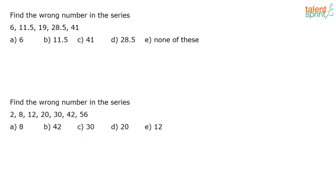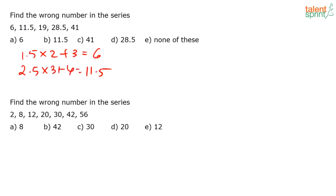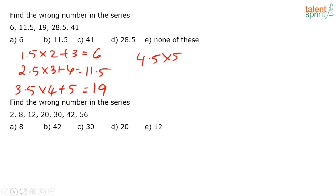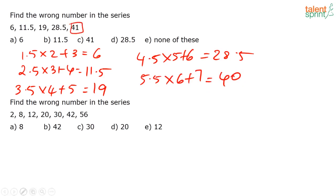Now finding wrong numbers in a series. Series: 6, 11.5, 19, 28.5, 41, 40. The pattern is: 1.5 × 2 + 3 = 6; 2.5 × 3 + 4 = 11.5; 3.5 × 4 + 5 = 19; 4.5 × 5 + 6 = 28.5; 5.5 × 6 + 7 = 40. So 41 is the wrong number — it should be 40. Answer is option C.